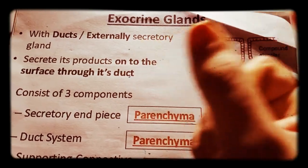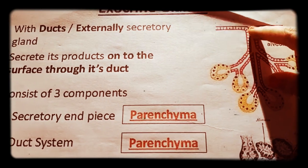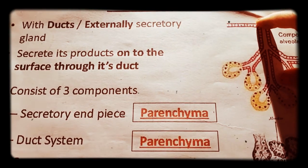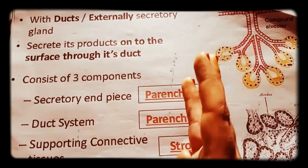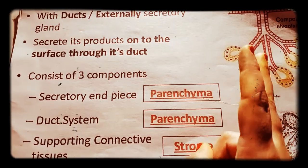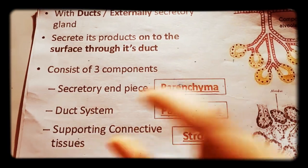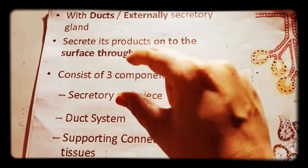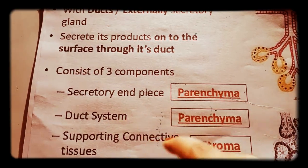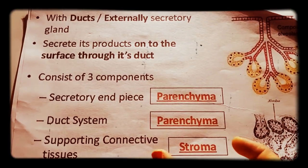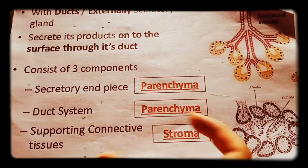Exocrine glands have ducts and are open on the surface. They have two main components: secretory units and a duct system. The third component is supporting connective tissue. The secretory units and duct are the parenchymal components, while connective tissue forms the stroma — the tissue responsible for nourishment.